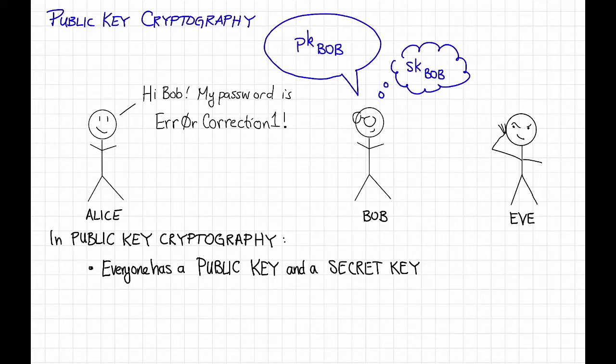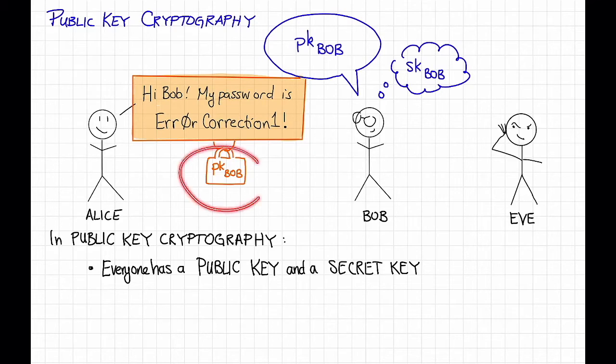Now, when Alice wants to send a message to Bob, she's going to encrypt her message using Bob's public-key. So she'll put it in a box and lock it with Bob's public-key, somehow. This looks like a tiny suitcase, but it is supposed to be a padlock, just bear with me.